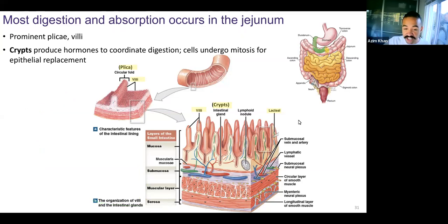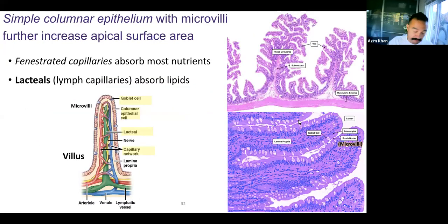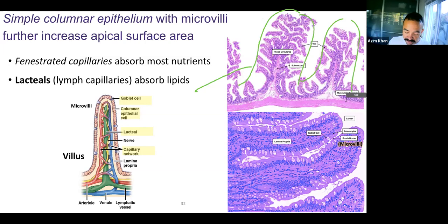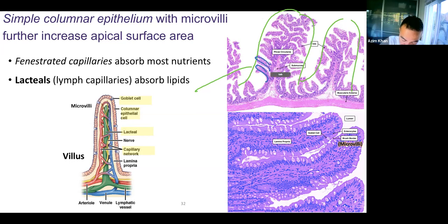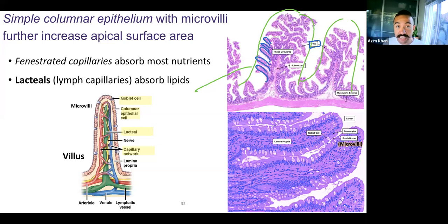When you look at the histology of the jejunum, really the one thing to look for are large, high-magnitude plicae. What I just traced in green are plicae. A single villus — the villi are smaller. So really large, prominent plicae in the jejunum because we want to maximize absorption of nutrients.